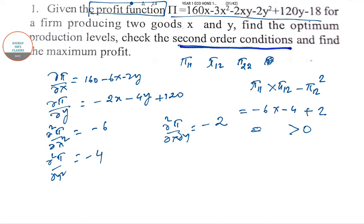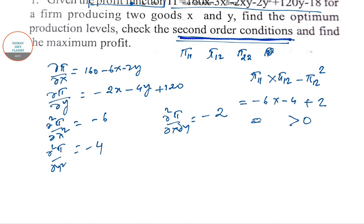Now coming to the second condition, we have to find the maximum value of the profit. Since π₁₁ is negative, it's a maximum. If π₁₁ is positive, that would have given you minimum value. So maximum is also being checked by second order condition.